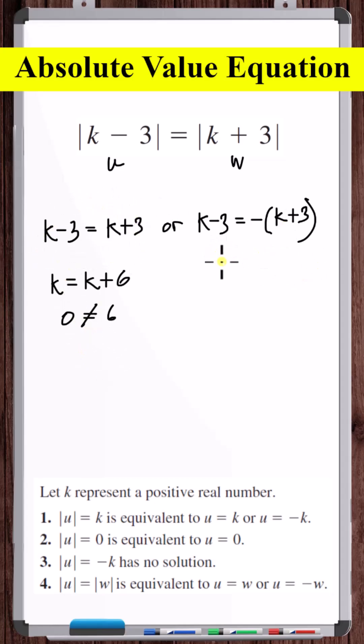Now let's solve this equation. Distribute the minus. Add three to both sides. Add k to both sides. Divide both sides by two.